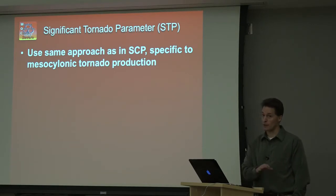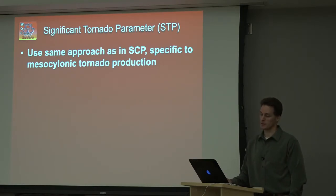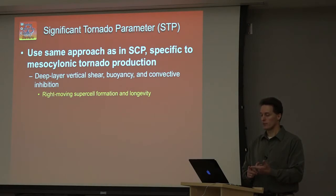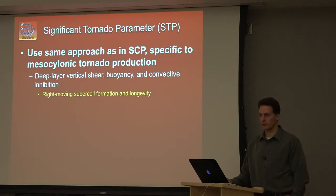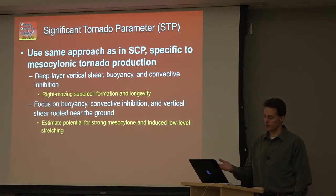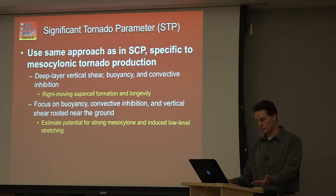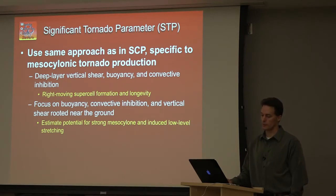What varies from a background supercell — what do we need to add to the supercell recipe to get an environment favorable for significant tornadoes? We need deep layer vertical shear, buoyancy, and convective inhibition because it's related to stretching potential. We need long-lived, right-moving supercells to maximize the odds of significant tornado production. We also want to focus on buoyancy, convective inhibition, and vertical shear near the ground — what is the forcing for stretching in the low levels and the resistance to that stretching.